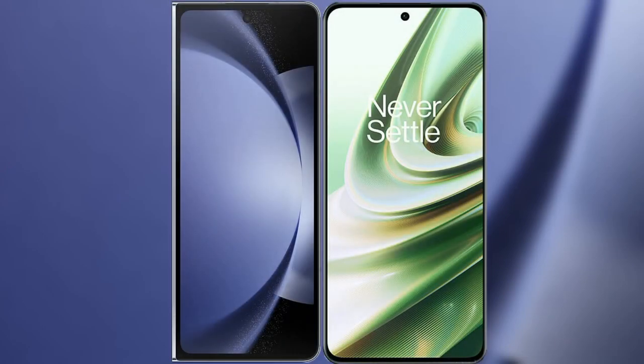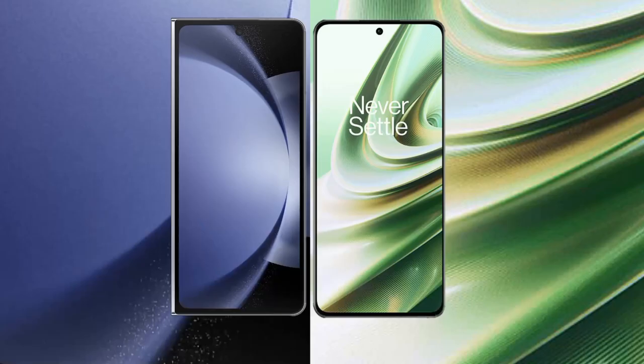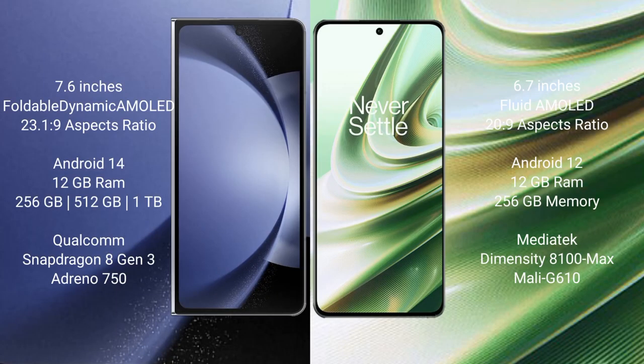I will compare the new Samsung Galaxy Z Fold 6 with OnePlus 10R. Samsung Galaxy Z Fold 6 comes with a 7.6-inch foldable dynamic AMOLED display. OnePlus 10R comes with a 6.7-inch foldable AMOLED display.